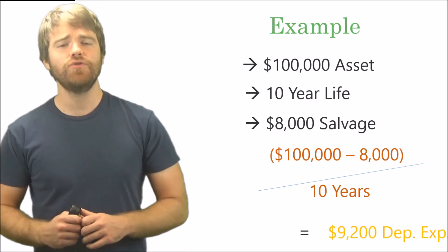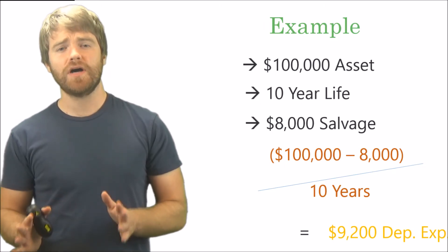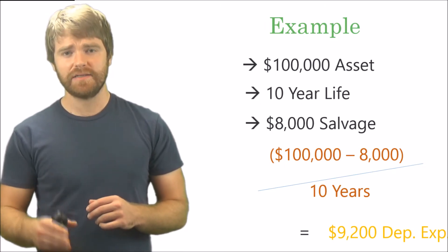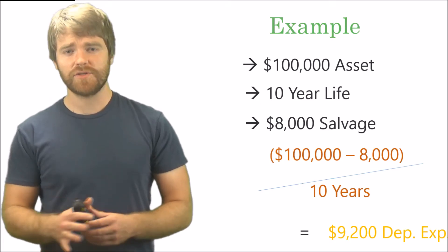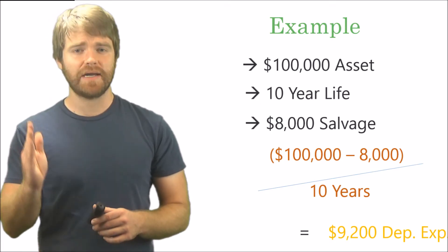You divide it out and get $9,200. So you depreciate that asset every year evenly—every year you depreciate it by $9,200.